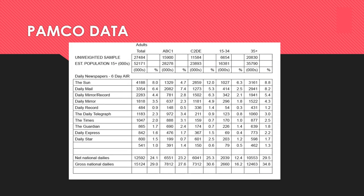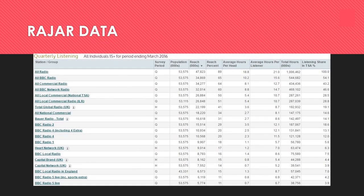This PAMCO data from a past paper exam is looking at newspapers, giving data about social class and age range. The Rajar data shows all the different radio stations examined, how many people each reaches, the average hours listened per person, and the total hours listened for each station.